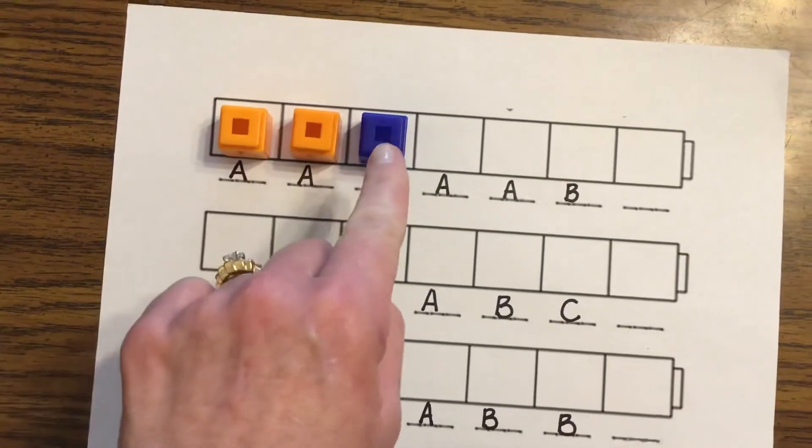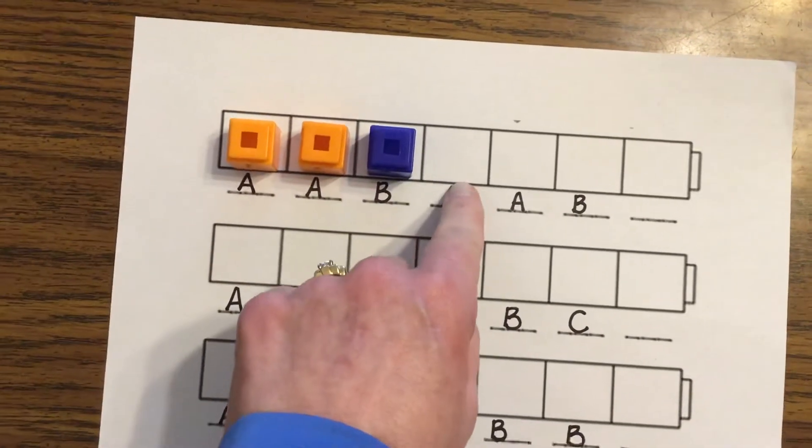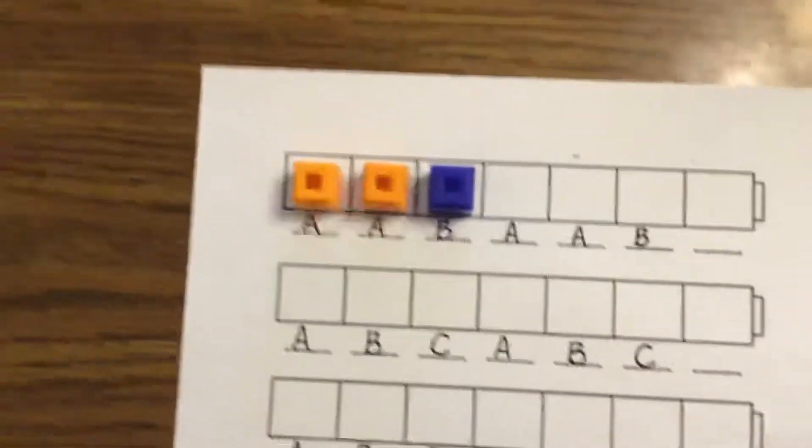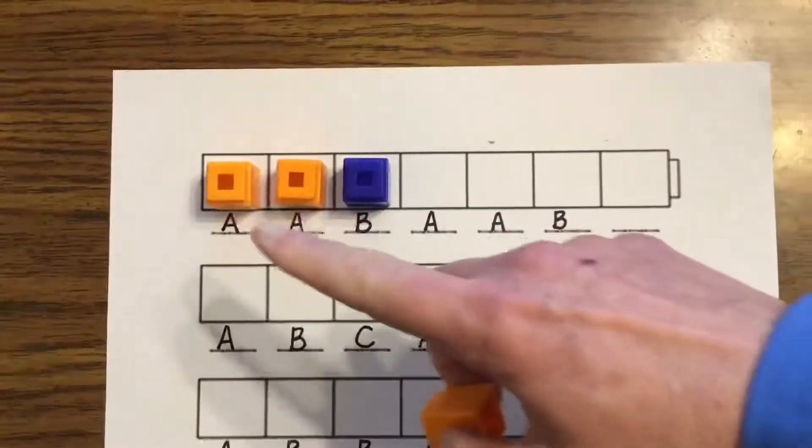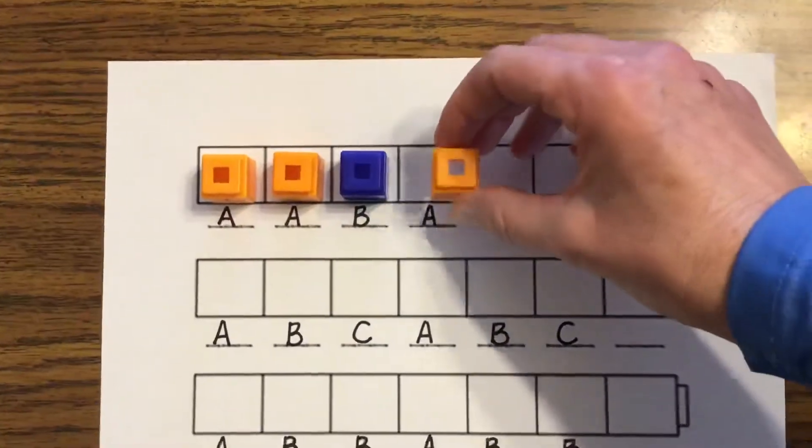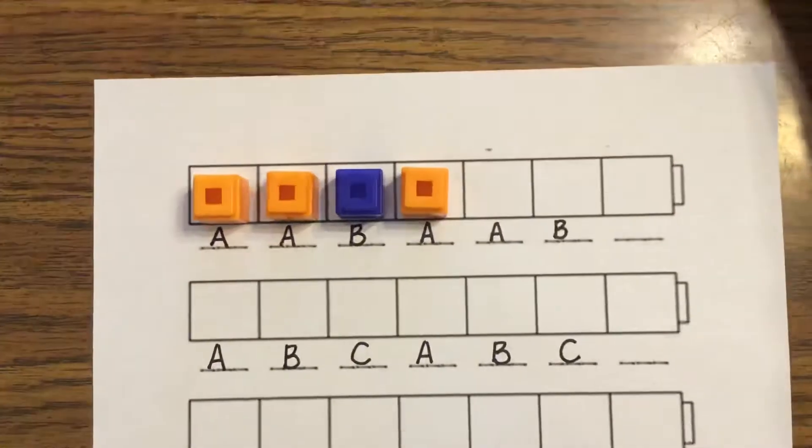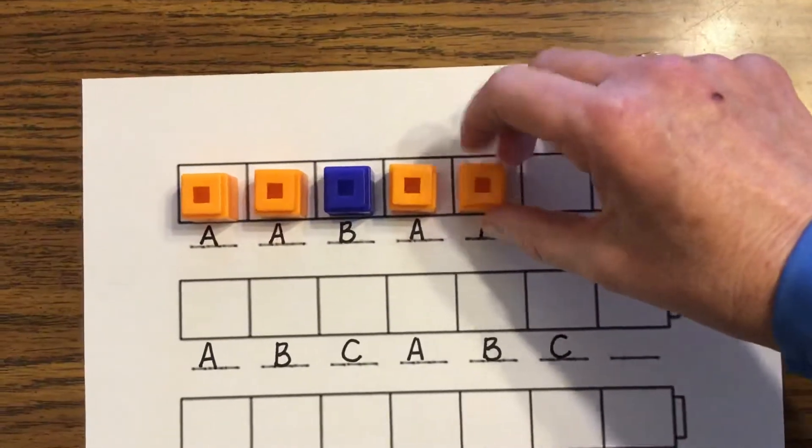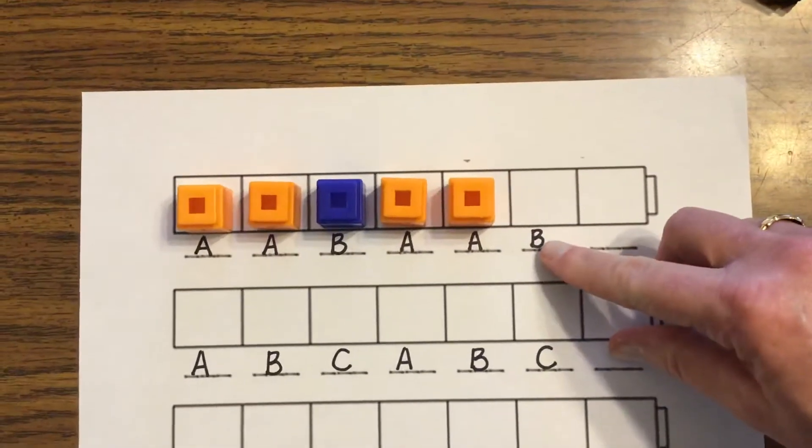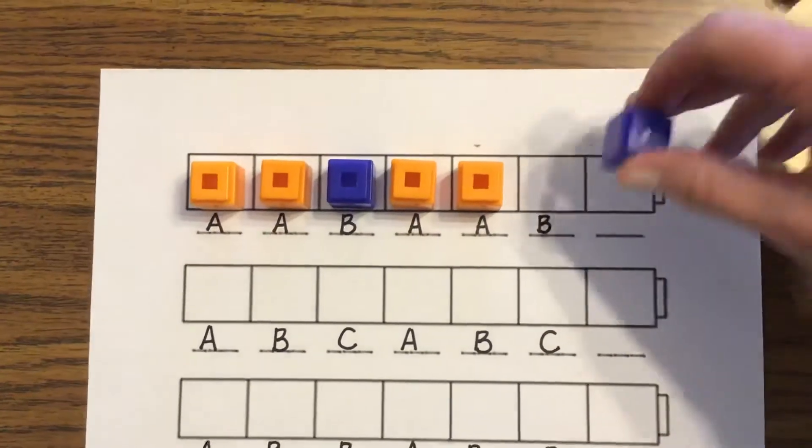Orange, orange, blue. What would come next? Right. I have AA again. Where I know my AA is orange, orange. Orange, orange. And what's my B? Blue. Right.